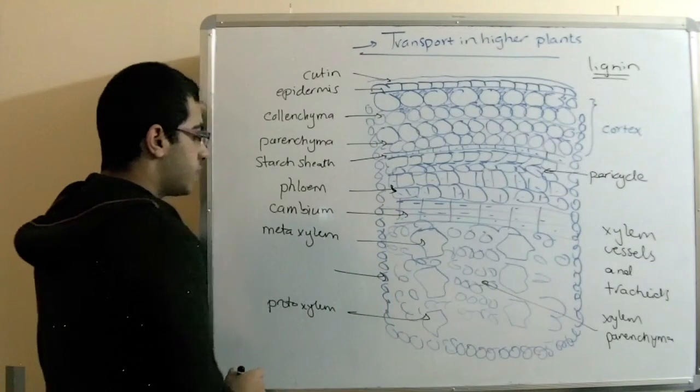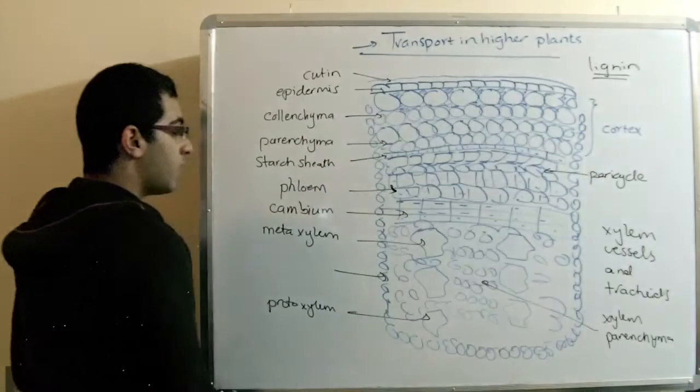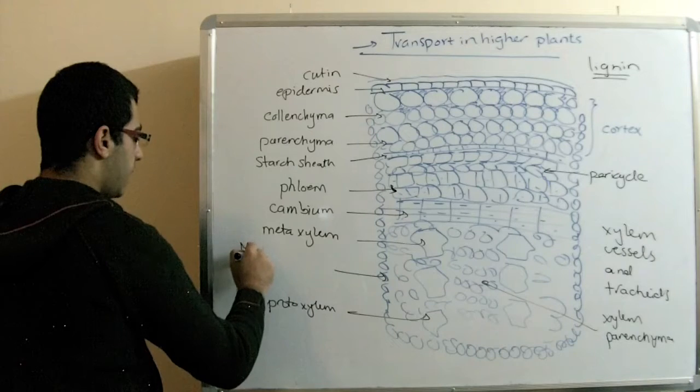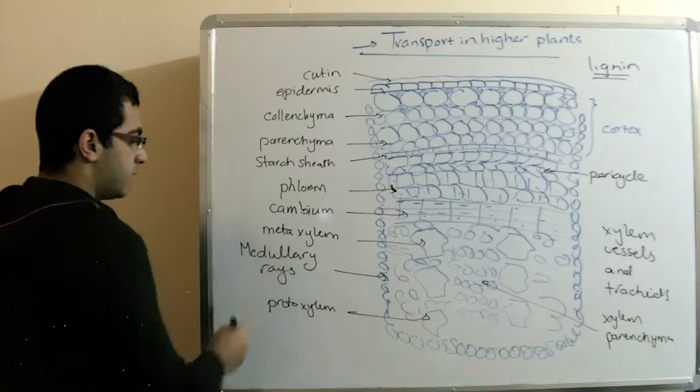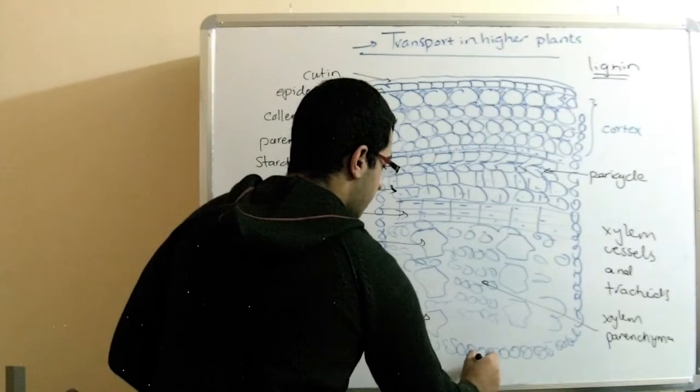And our last is this row of cells here, which is called medullary rays. And here, this is the pith.